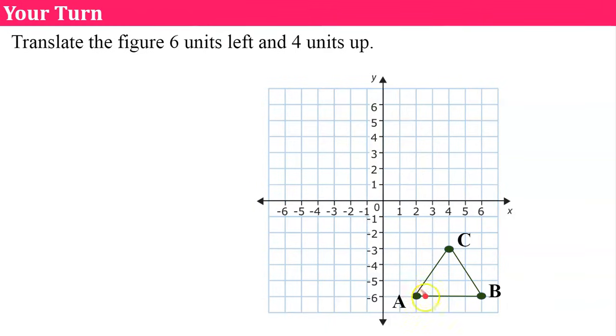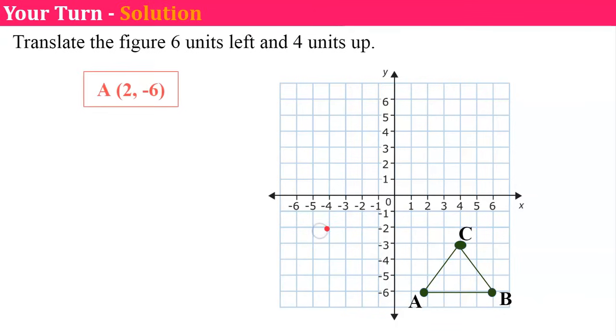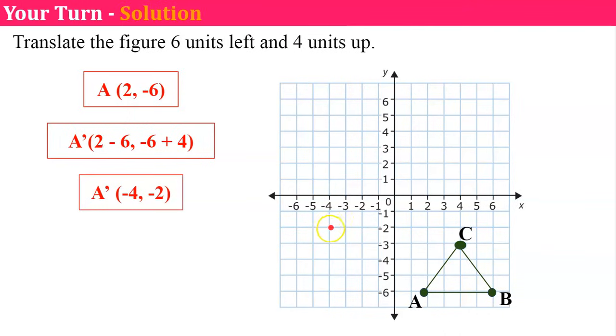I'm going to do each point individually. So A is going to go one, two, three, four, five, six to the left, and four up. One, two, three, four. And there we have it. A is going to start at two negative six. There's my transformation mathematically. And I end up at negative four, negative two right here. And there's my point A prime.